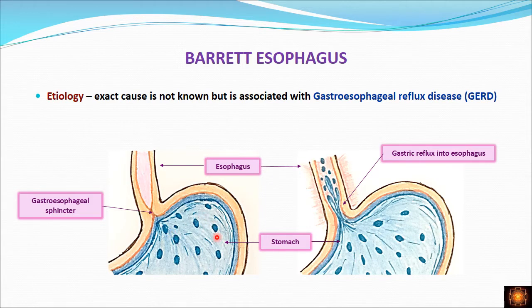In some patients, there is loosening of this sphincter — it cannot be tightly closed. This occurs in certain conditions such as connective tissue disorders like scleroderma, or in patients who have a habit of smoking, obesity, pregnancy, and in patients who have delayed gastric emptying. These are some of the causes of gastroesophageal reflux.